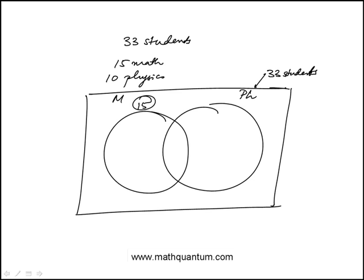This is 15, that's 10, and they tell us that 5 are enrolled in both a mathematics course and a physics, which means math alone would be 10 because this circle is 15. Same thing, physics alone is 5.